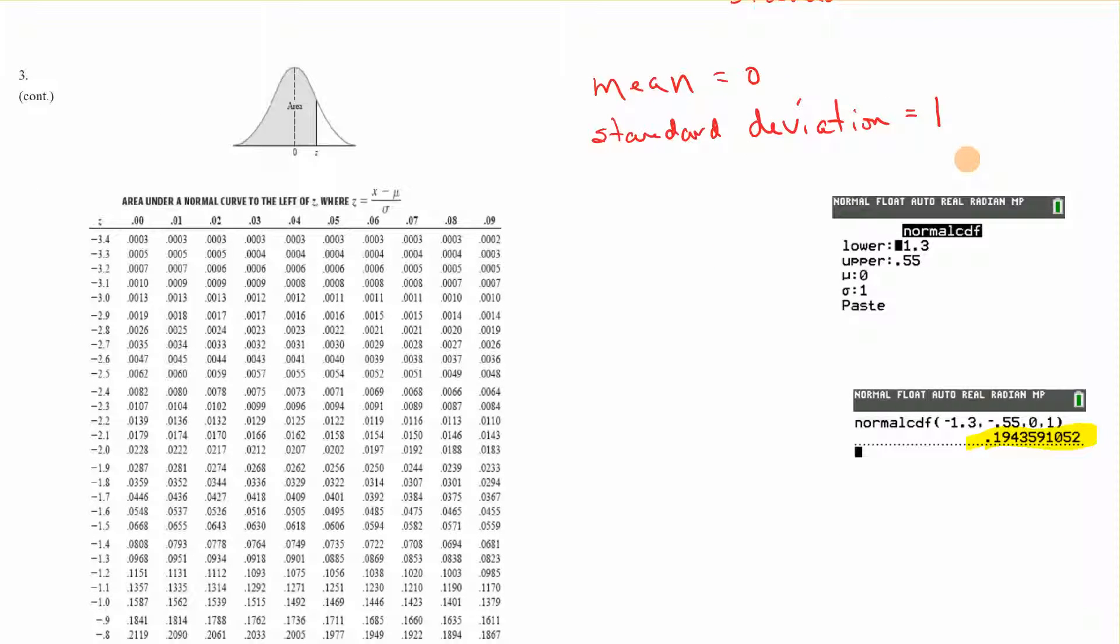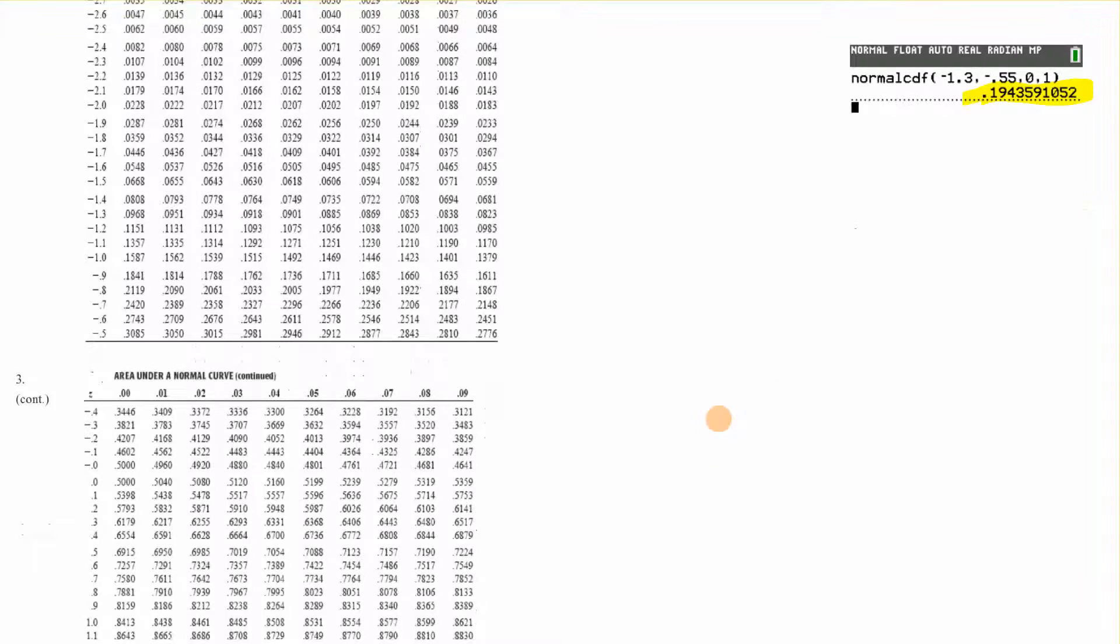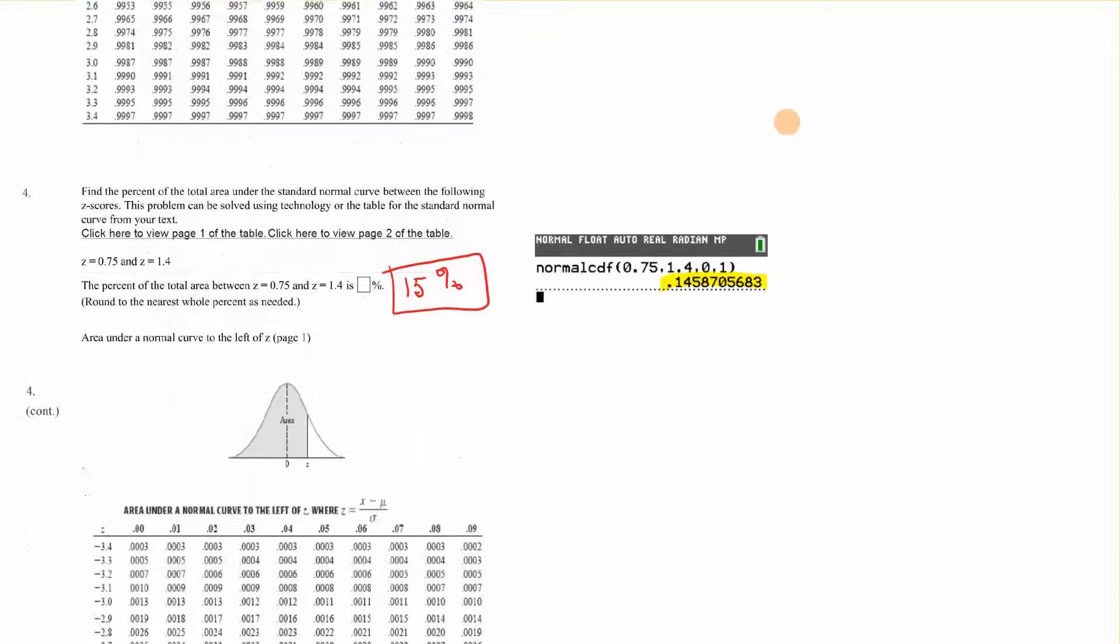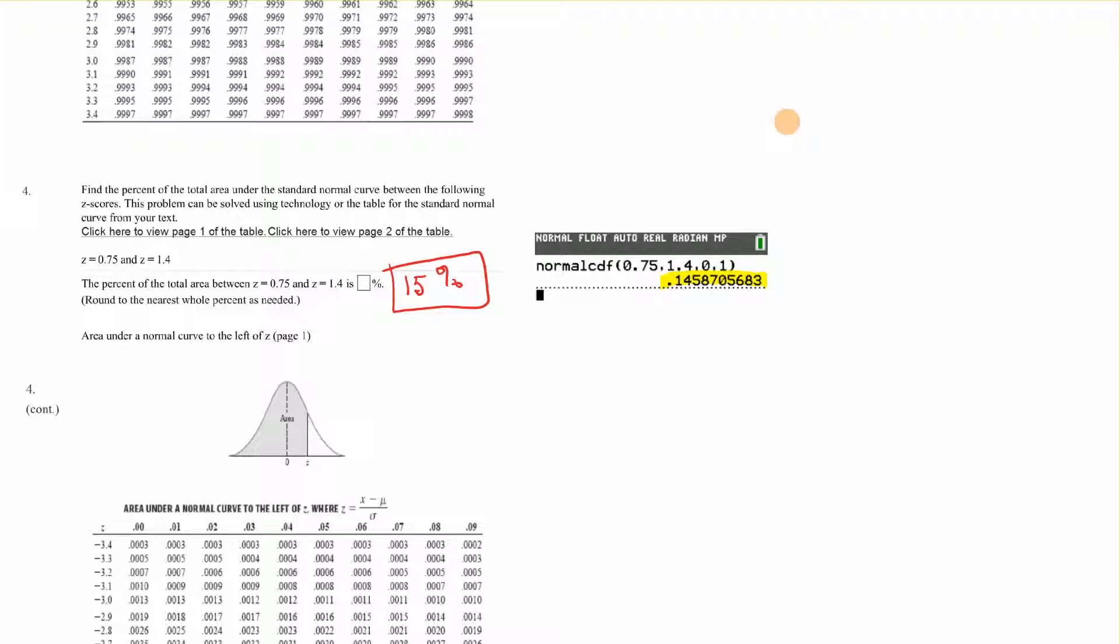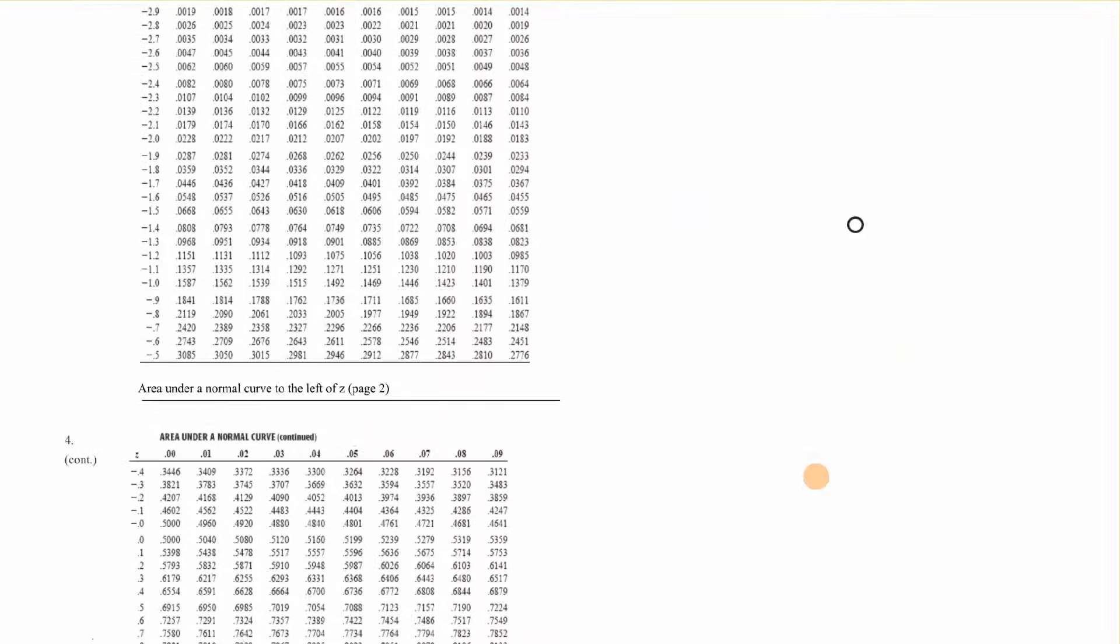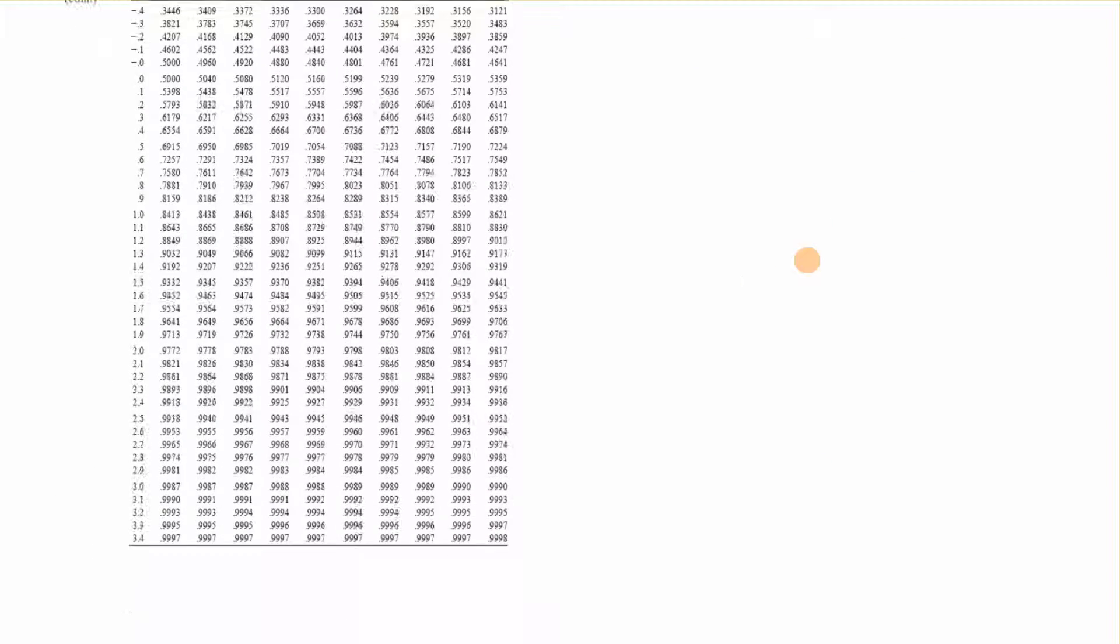If you're using the older version, these are already in here. Put in your negative 1.3 because it gave you these two z-scores, and you're saying what is it between those two. You'll get the same answer. If you are using the table, you would have to do some other calculations. For number 4, you're finding the percent between 0.75 and 1.4. We get 0.145, so if we're rounding to the whole percent, it'll be 15%.